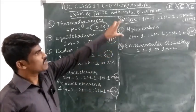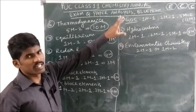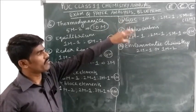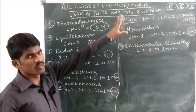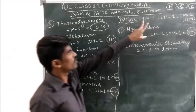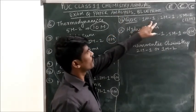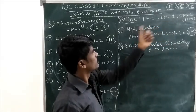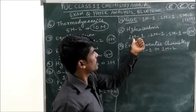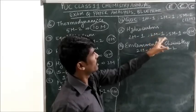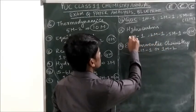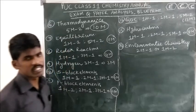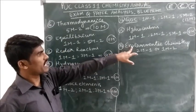The maximum weightage chapters are Organic Chemistry. General Organic Chemistry and Hydrocarbons together have a total weightage of approximately 21 marks. From General Organic Chemistry you get 1 one-mark, 1 two-mark, and 2 five-mark questions. From Hydrocarbons you get 1 one-mark, 1 two-mark, and 1 five-mark question — total weightage 8 marks.